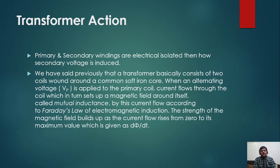We have said previously that the transformer basically consists of two coils wound around a common soft iron core. When alternating voltage VP is applied to the primary coil, current flows through the coil which in turn sets up a magnetic field around itself called mutual inductance.